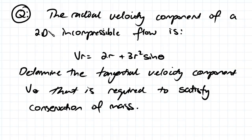So we've got our question here. The radial velocity component of a 2D incompressible flow is vr equal to 2r plus 3r squared sine theta. So this is the radial velocity component.